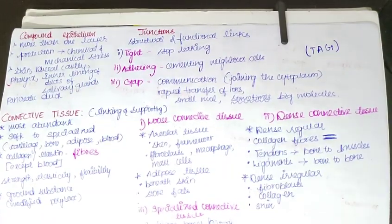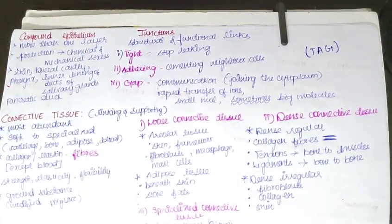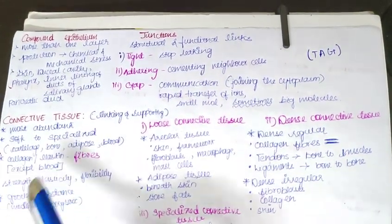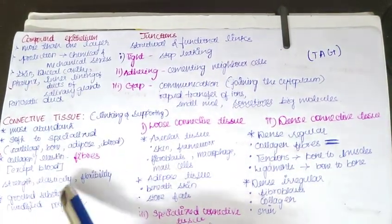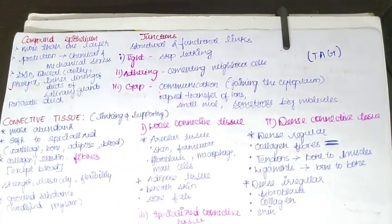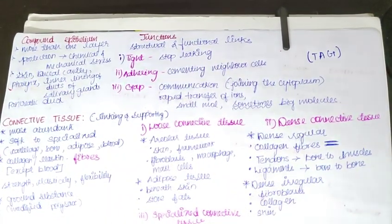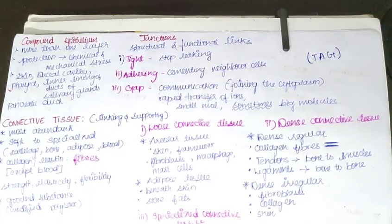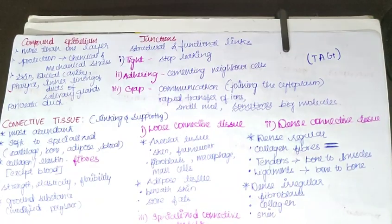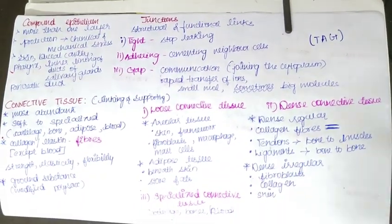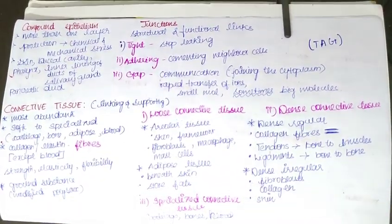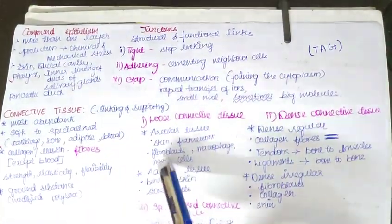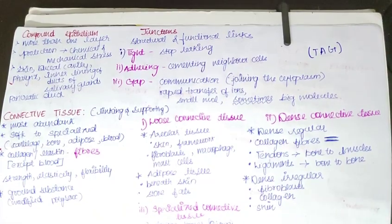This kind of tissue includes cartilage, bone, adipose, and also blood. Except blood, all connective tissues have fibers which are called collagen or elastin. These fibers provide strength, elasticity, and flexibility. Connective tissues also have modified polysaccharides in their cells which act as a ground substrate.